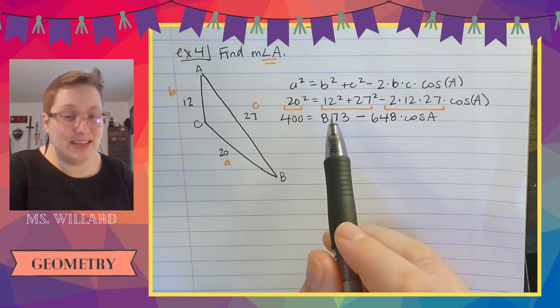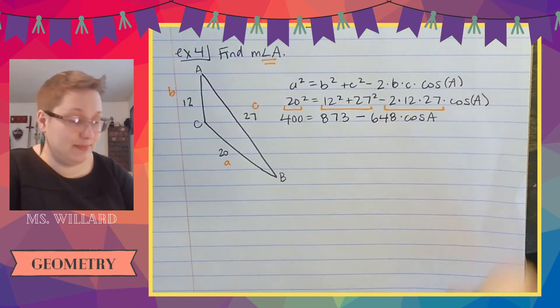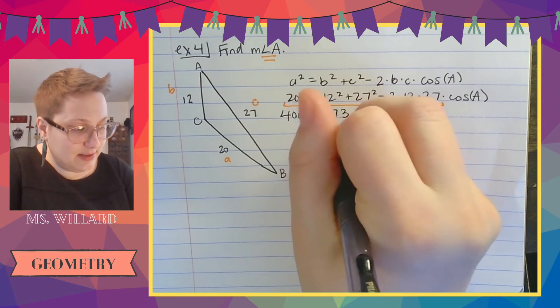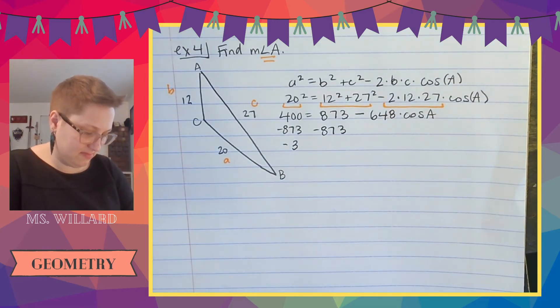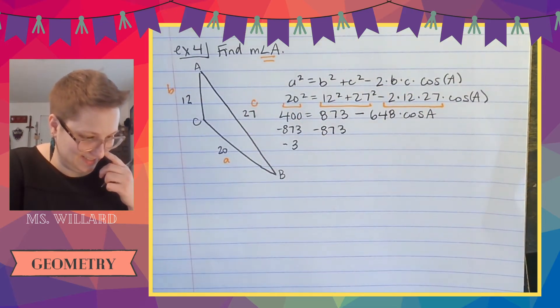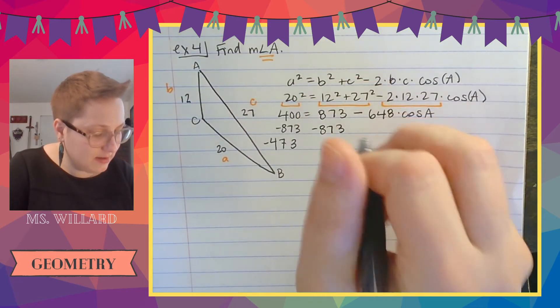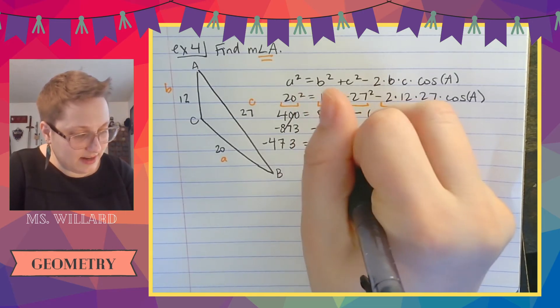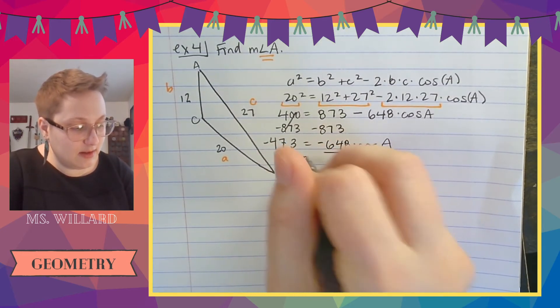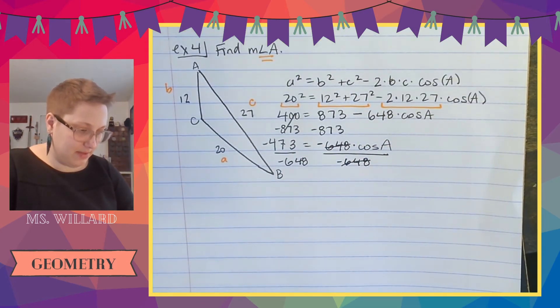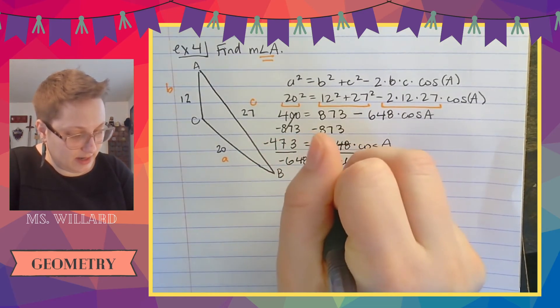So here's the really gross numbers I got. And the reason I'm going to do this, I'm doing this step by step is because so many people will do 873 minus 648. You can't do that because it's 648 times cosine of A and PEMDAS is still a thing, even though we're in honors geometry, especially since we're in honors geometry, I should say. So I'm going to subtract 873 to the other side. So I get negative 473 equals negative 648 times cosine of A. And I'm going to divide both sides by the negative 648. And the reason we're doing this is because cosine of A is the unknown. So that's like our X value. And then we have to make sure that that X value is left onto its own devices.